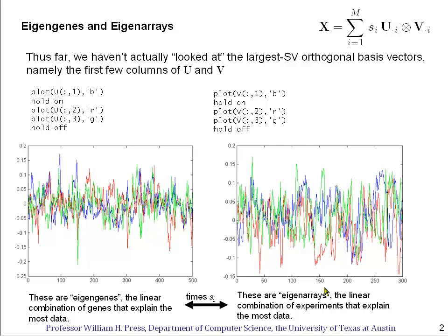And on this side, because it's an array expression experiment, we can call them eigenarrays, and they are the linear combination of experiments that best explain the most data.